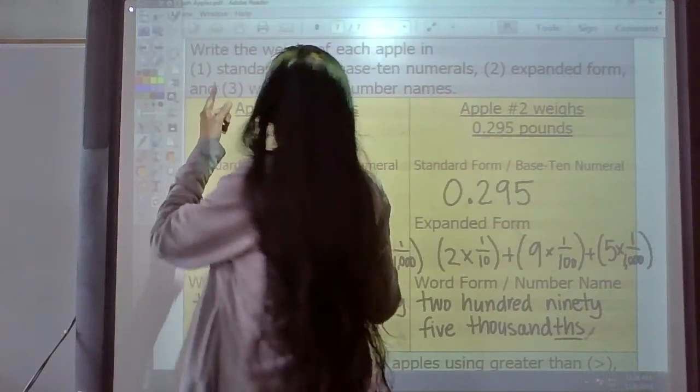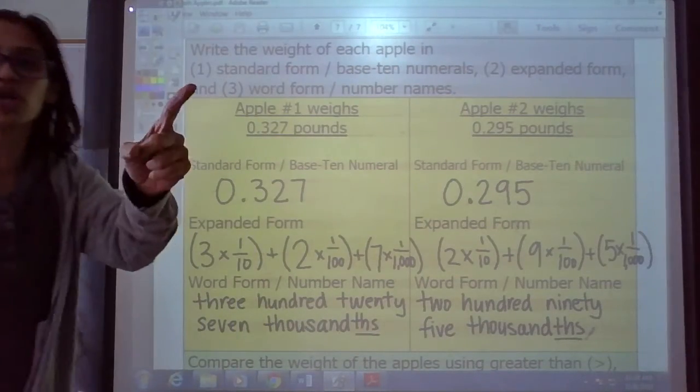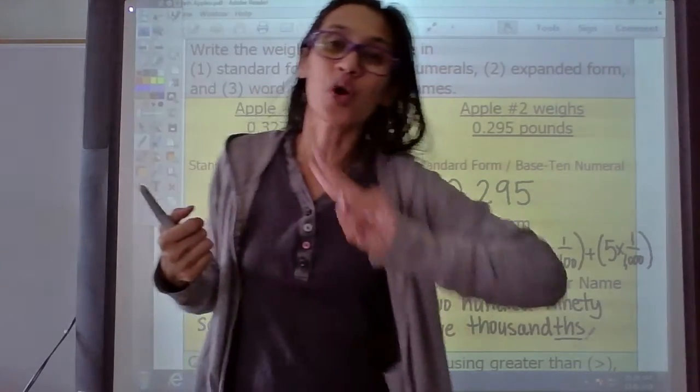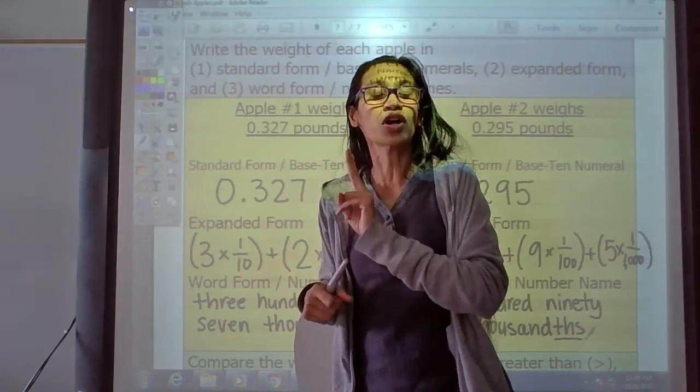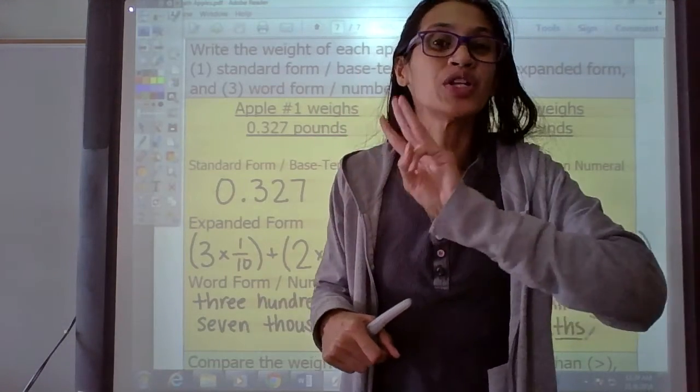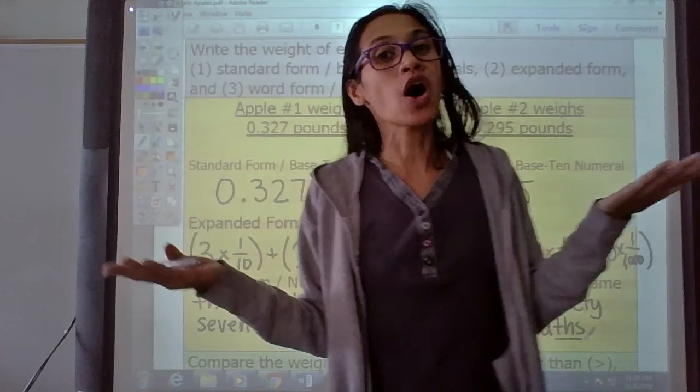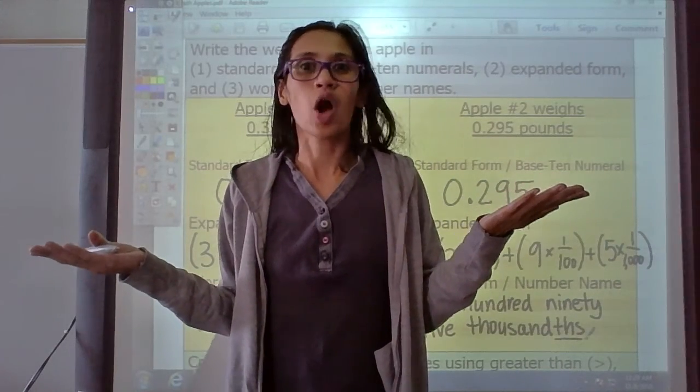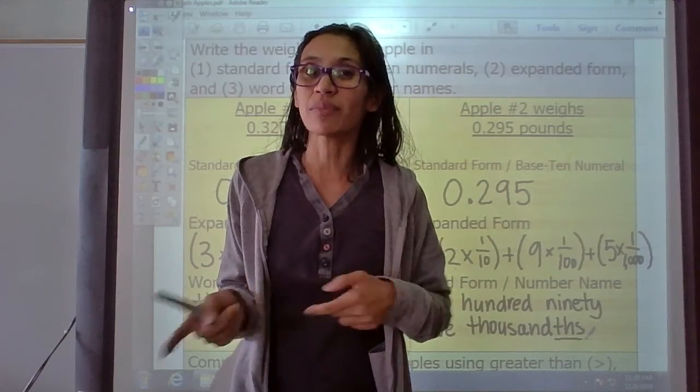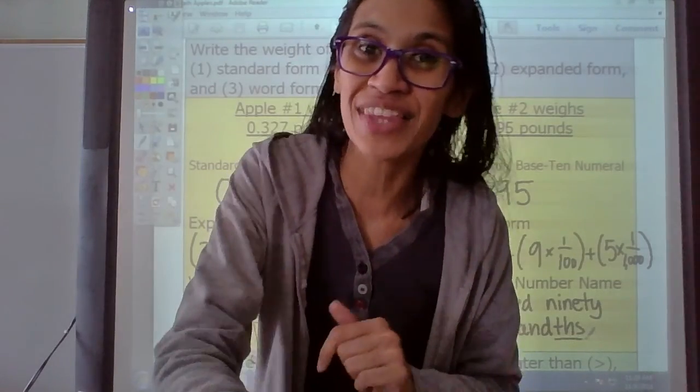We wrote these numbers three ways. We wrote the what? Standard form. Base-ten numeral. That's one way. We wrote it in expanded form. That's the second way. And the third way is to write it in word form or number names. So you know how to write numbers in all kinds of ways. We are almost done. See you in the next one. If you need any help, go check out the other videos. See you then.